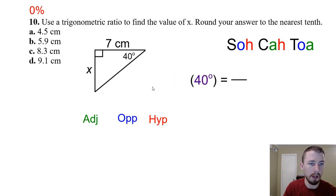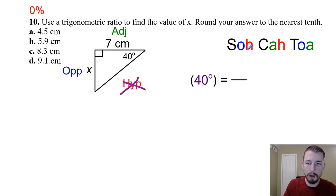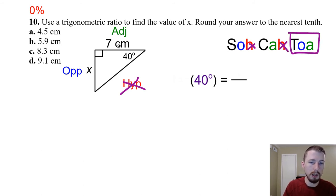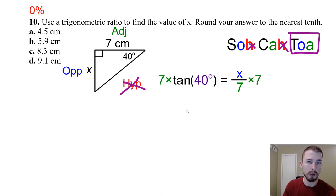Number ten — use a trig ratio to find the value of x. The angle is 40°. The opposite leg is x and the adjacent leg is 7; the hypotenuse is not used. Without the hypotenuse, we use the tangent function: tan 40° = x / 7. Multiply both sides by 7: x = 7 tan 40°. Put that in the calculator, which gives approximately 5.9.